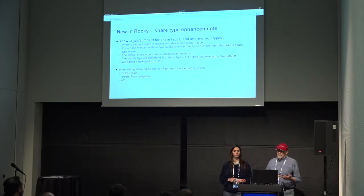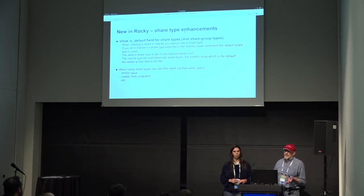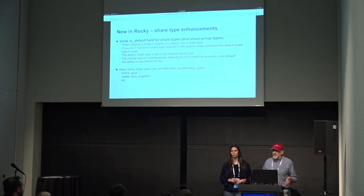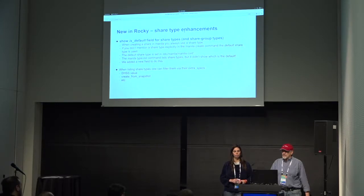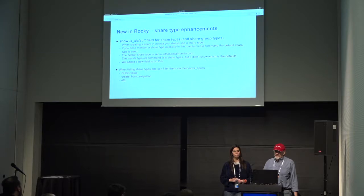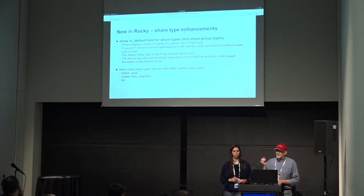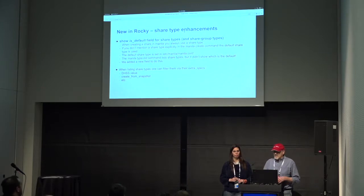One of the features in Rocky was enhancements to the notion of share type. If you're familiar with the idea of a Cinder volume type, it's like that — basically a template for the kind of storage you want. I want SSD storage, or a particular backend, using extra specs to do it. There's a default share type that's always needed, and if you create a share without mentioning a share type you get the default. We didn't used to show people what was the default — you had to look at a file only available to administrators — so it's a usability enhancement.